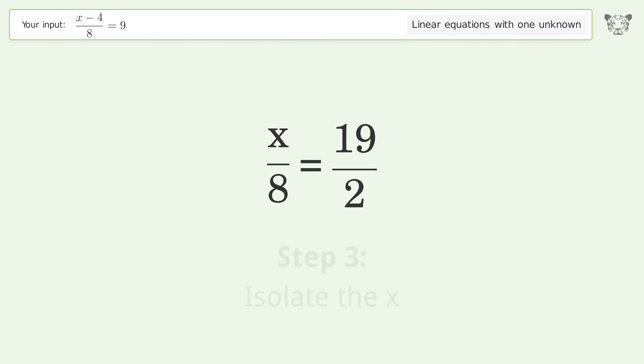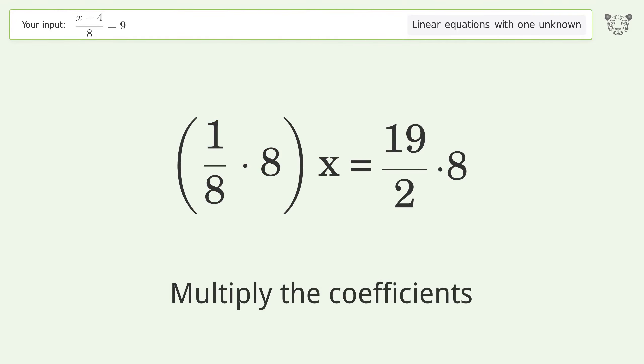Isolate the x. Multiply both sides by 8. Group like terms. Multiply the coefficients.